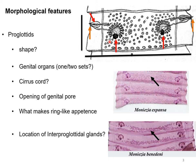Due to the appearance of the vitelline gland and ovary, one may assume that two rings are located in each proglottid. The next important feature is the interproglottidal gland.